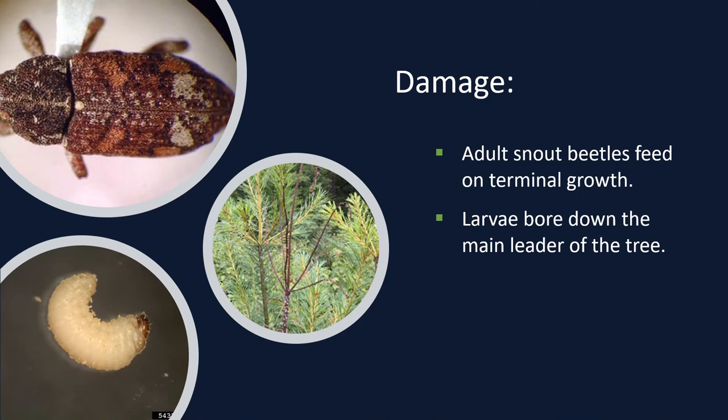In March to April, adult beetles emerge from their overwintering site, usually in the leaf litter on the ground, and begin laying eggs. These snout beetles, also known as weevils due to the shape of their heads, are small rust-colored insects between 4 and 6 millimeters long. They have irregularly shaped patches of brown and white scales on the front wings, and there is a large patch of white near the tip of the front wing. After the eggs hatch, the white larvae bore down through the main leader of the tree, usually between June to August.